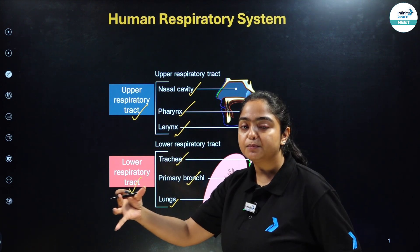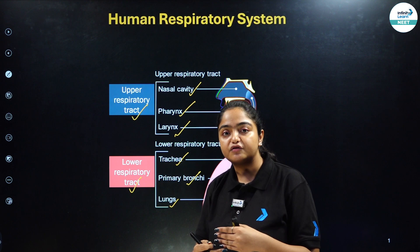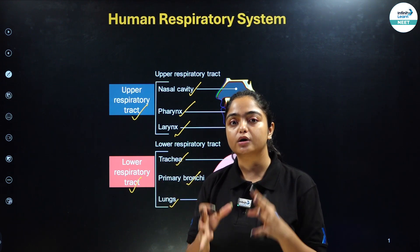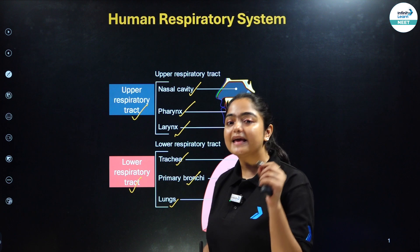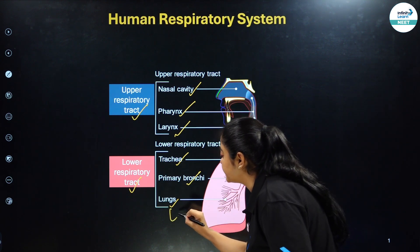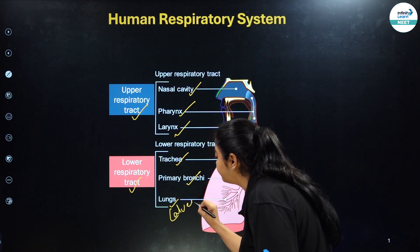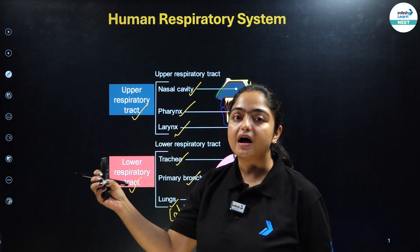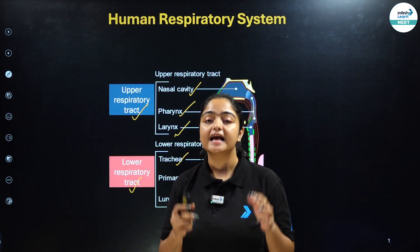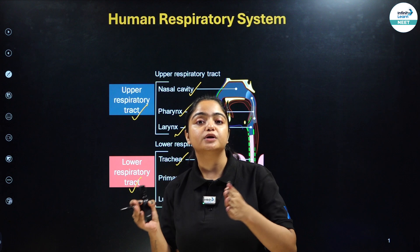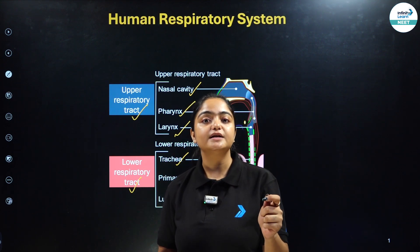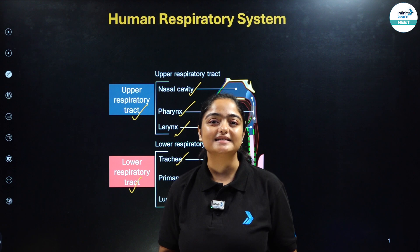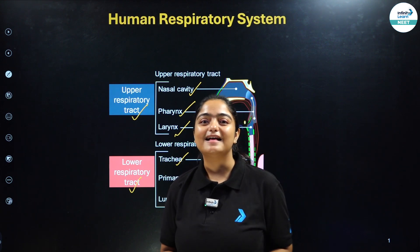Technically, primary bronchi will further get divided into secondary bronchi, then tertiary bronchi, then bronchioles, and ultimately when we talk about the lungs, the actual exchange of gases takes place with the help of alveoli. Apart from alveoli, if I talk about the other parts included in the respiratory tract, they actually help with the transportation of the gas. But the actual exchange of gases takes place in the alveoli.